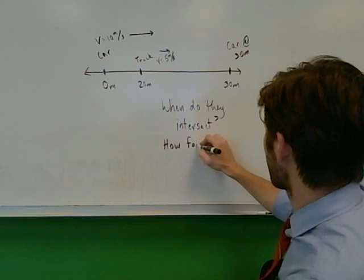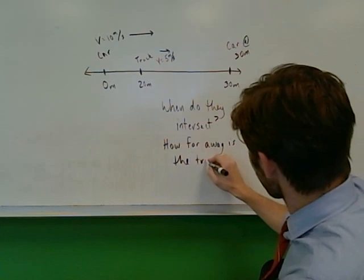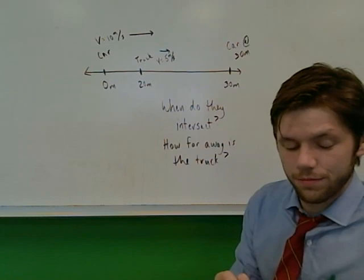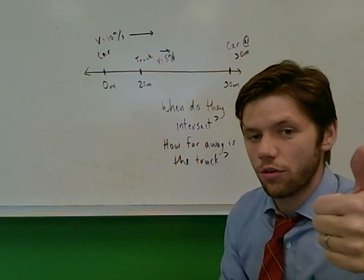Question one: when do they intersect? Question two: when the car gets to 30 meters down the road, how far away is the truck from the car? So start with the diagram here. You need to worry about a graph that makes sense to help you solve it, the equations of motion, and then of course a numerical solution. Okay, we'll see you tomorrow.